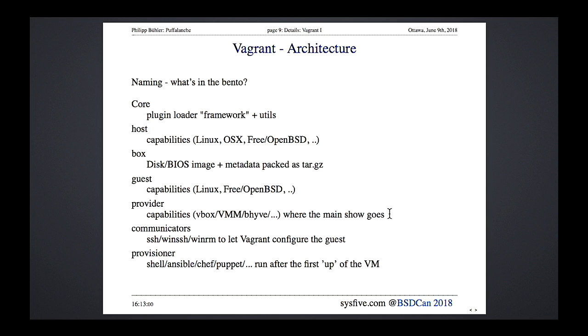The provider is the actual hypervisor you're using — that's the main topic of today's talk. Communicators allow Vagrant, after the VM comes up, to log into the machine and do things like setting the hostname. Provisioners run when the machine is fully up: you can add an inline or external shell script, Ansible, Chef, Puppet, Salt — almost everything available today is reachable via additional plugins.